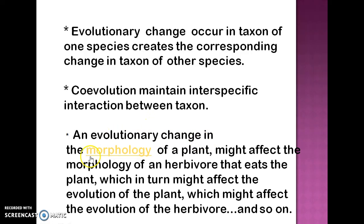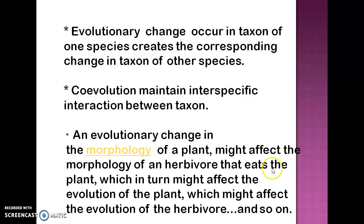An evolutionary change in the morphology of a plant might affect the morphology of an herbivore dependent on that plant. That change in the herbivore might in turn affect the evolution of the plant, which affects the herbivore again, and so on. You can say the plant and the herbivore are reciprocally regulating each other.